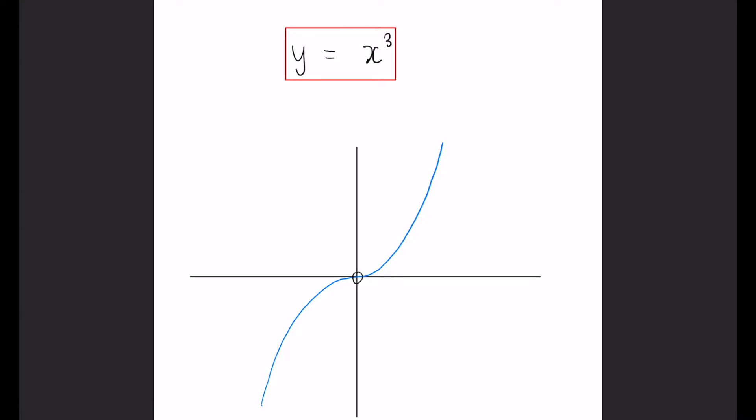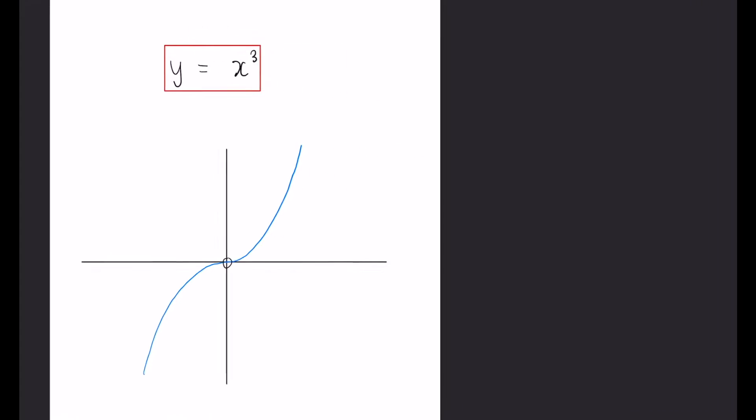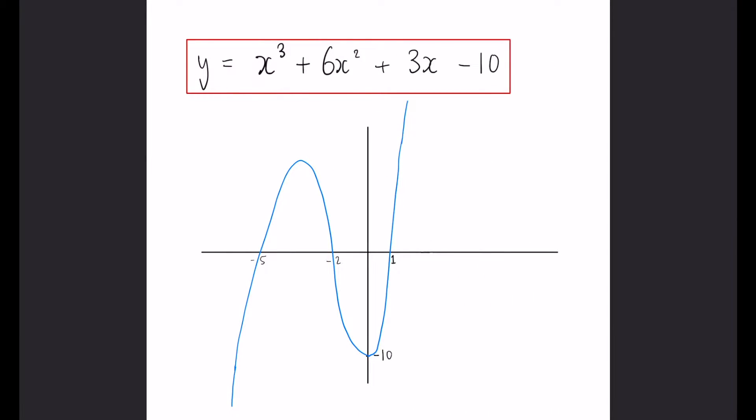Now, if we add some other variables in there, for example, some X squared values, some X values and an integer, you can see it changes a little bit. It still has its regular S shape, but by adding all these extra components to it, it does change the graph slightly. This is a good example of the general form of a cubic. You've got an X cubed, an X squared, an X and a constant, and the coefficients of these will determine what the graph will look like.